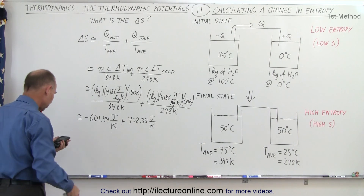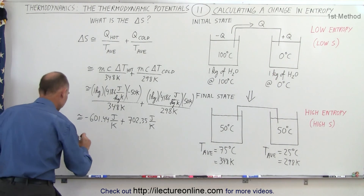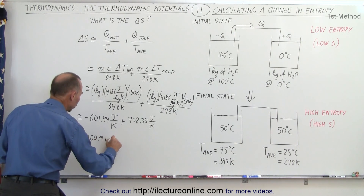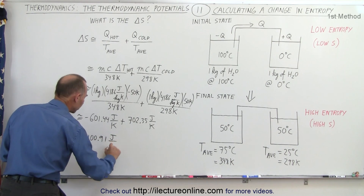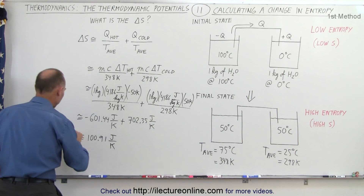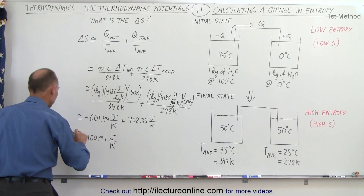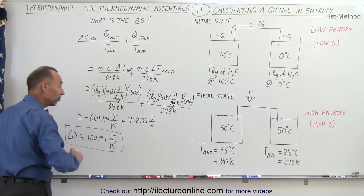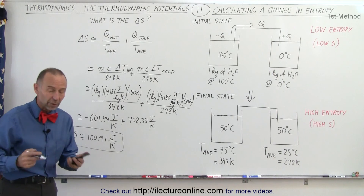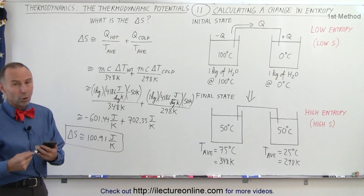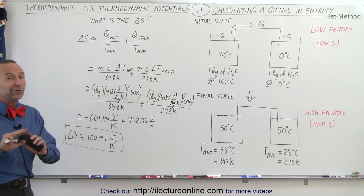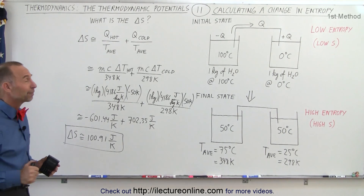Adding the two together: 702.35 minus 601.44 gives us 100.91 joules per Kelvin for the change in entropy in this process. Notice it's a positive quantity — it always will be positive. If you end up with a negative quantity, you did something wrong.